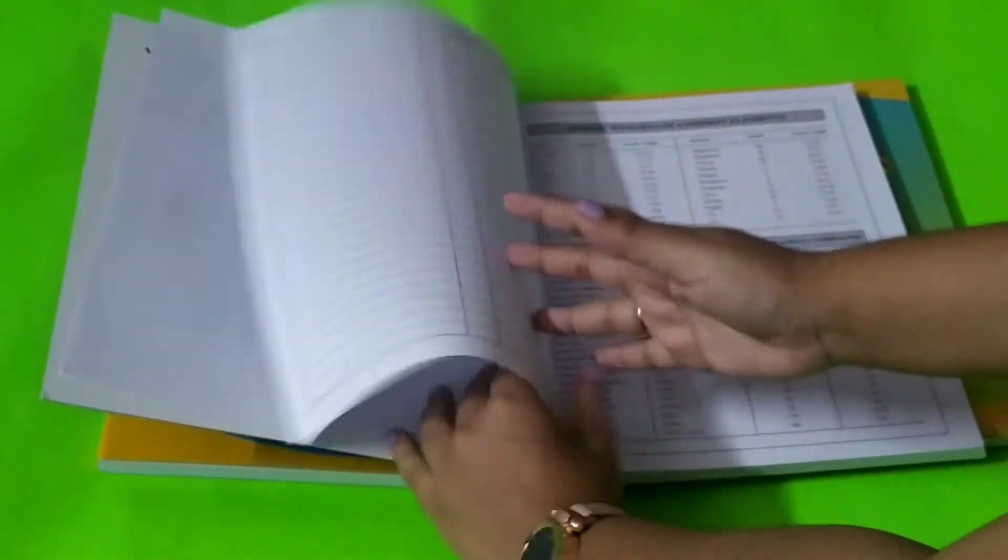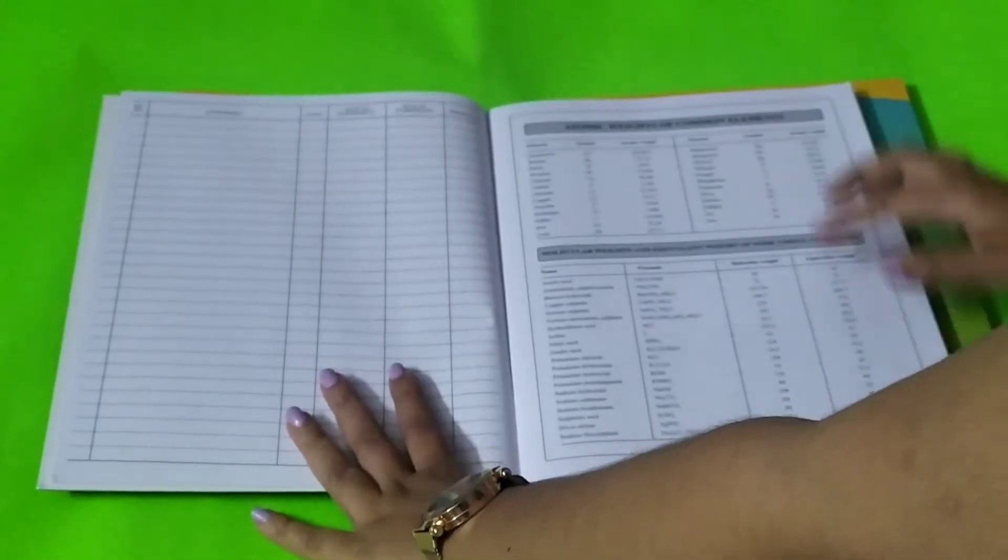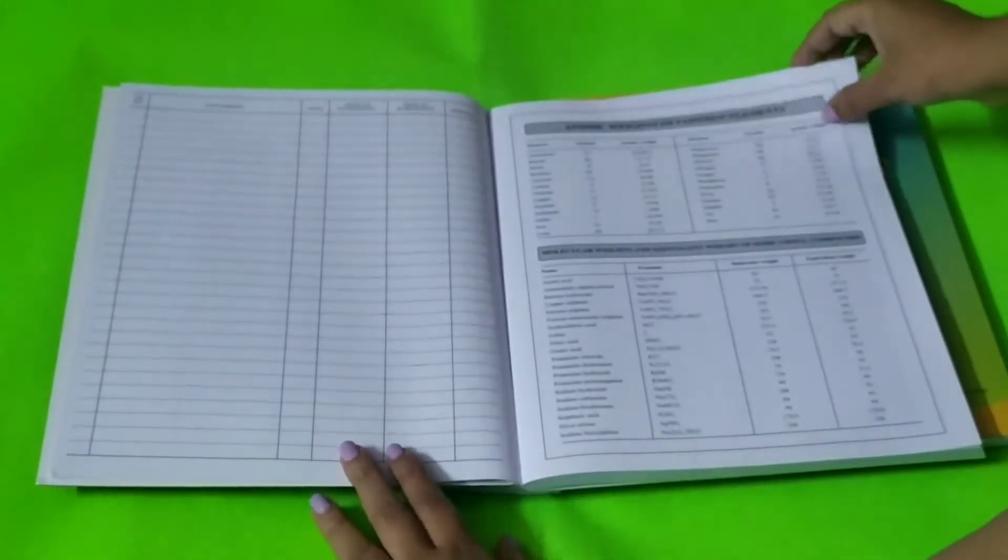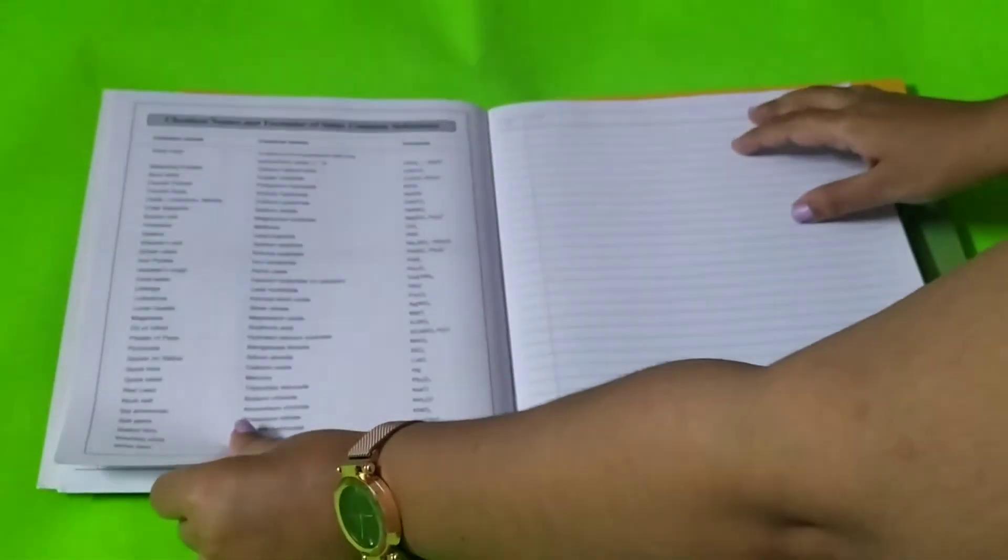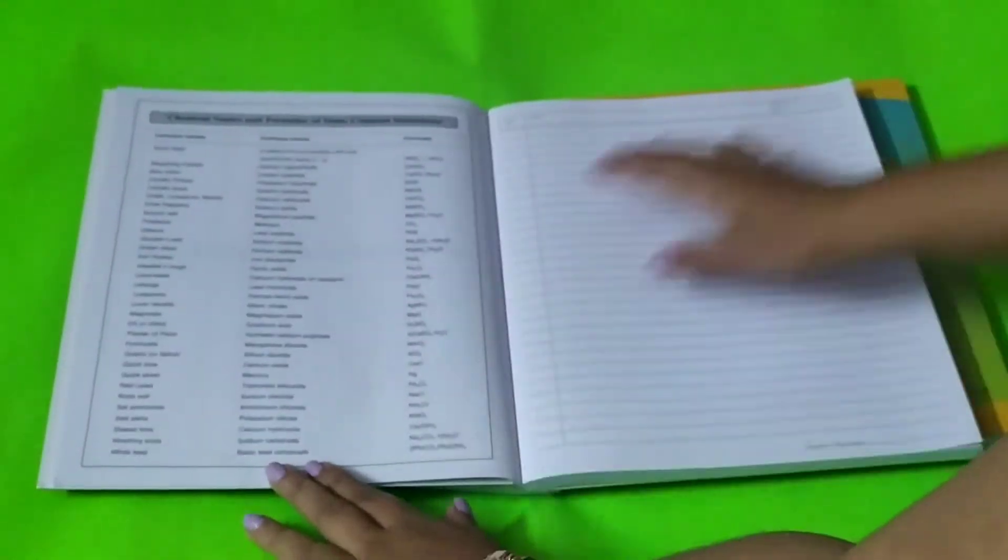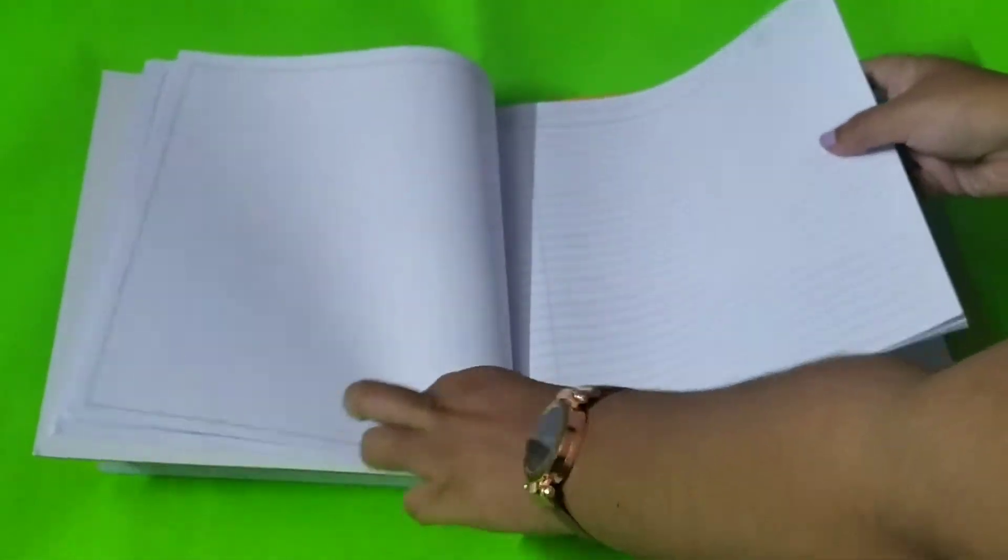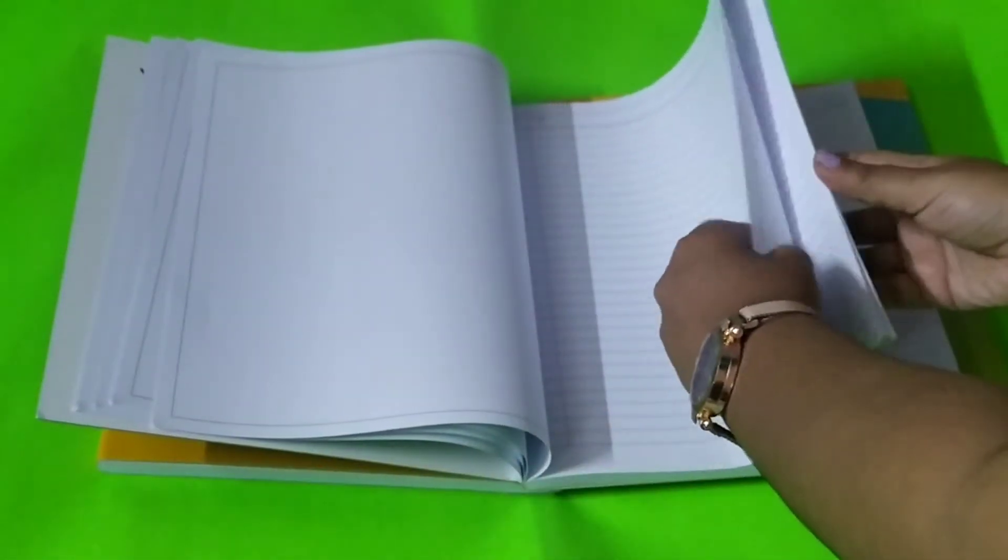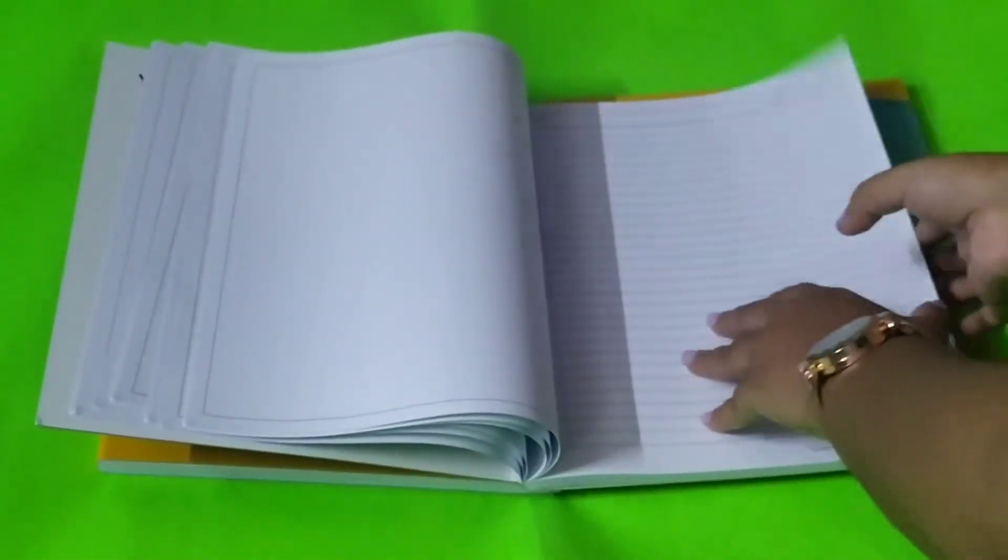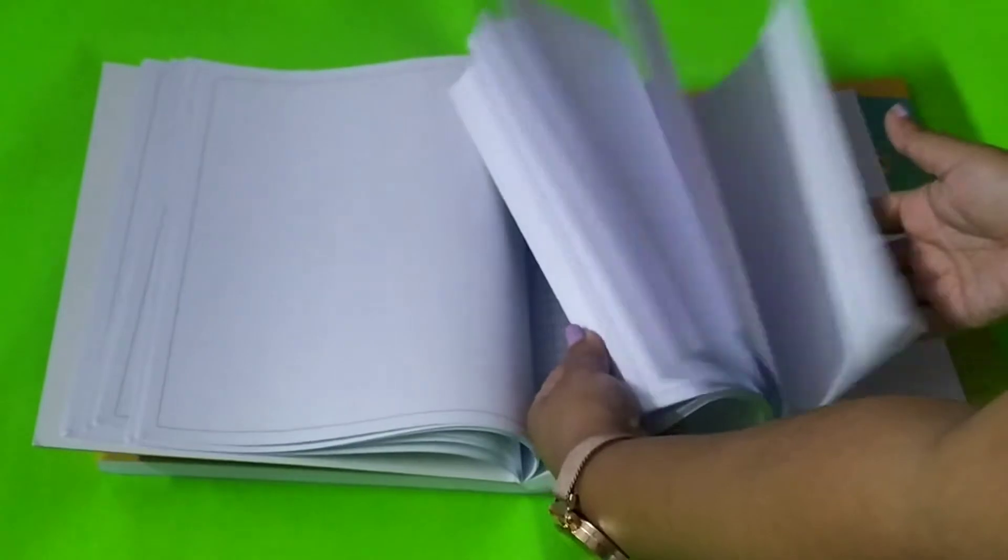You get 176 pages for this. The physics one I got for 84 rupees. All of them are 100 rupees, but physics I got for 84 rupees, biology I got for 82 rupees, and chemistry I got for 85 rupees from Flipkart. That was the offer price.